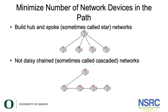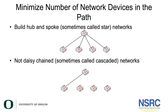The first rule: minimize the number of network devices in the path. We want you to build hub-and-spoke networks, sometimes called star networks — shown in the top diagram — where you have an aggregation device and every other device connects directly to it. We do not want you to build daisy-chain or cascaded networks. We see this in campus networks where one building has an internet connection.